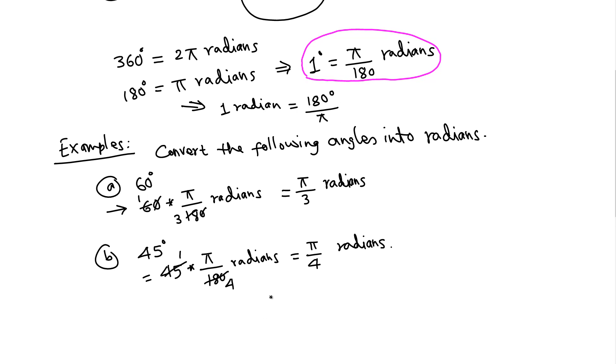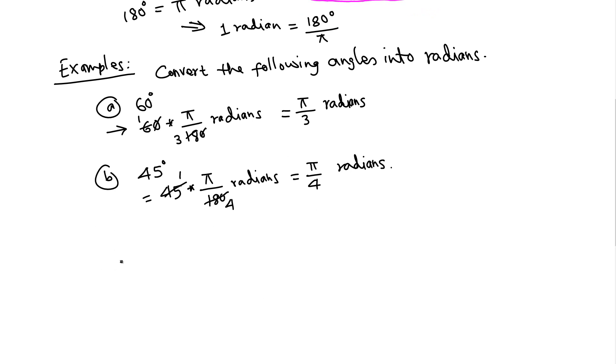At the same time, if this is the initial side and the ray goes counterclockwise, the positive angles are counterclockwise. If we go clockwise, then the angle becomes negative.